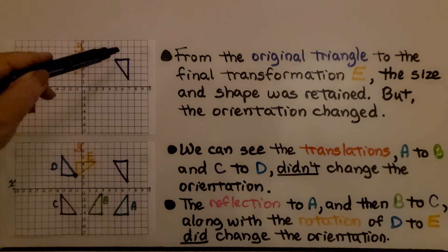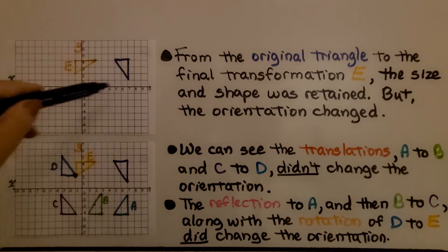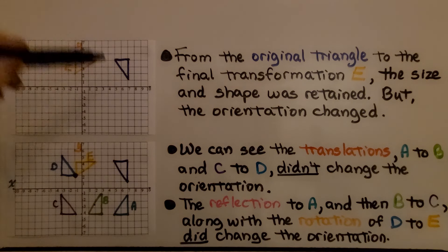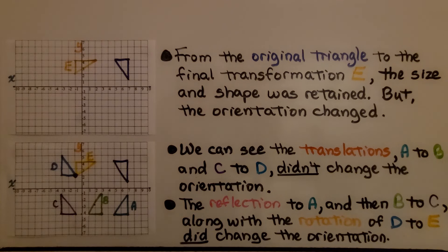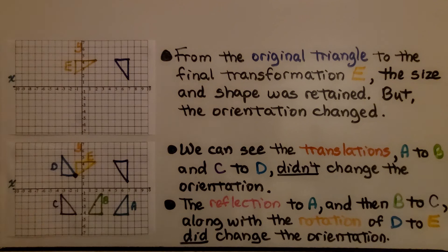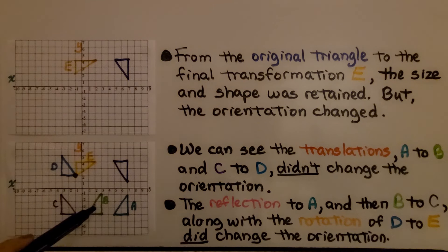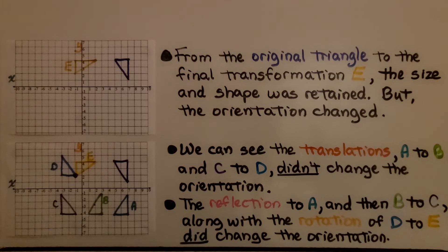From the original triangle to the final transformation E, the size and shape was retained, but the orientation changed. It went from pointing down like this to pointing that way. We can see where the right angle is in the triangle. And we can see the translations from A to B and then from C to D didn't change the orientation, but the reflection to A and then from B to C along with the rotation of D to E did change the orientation.